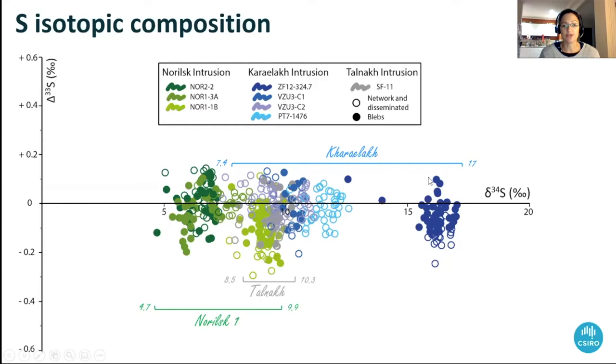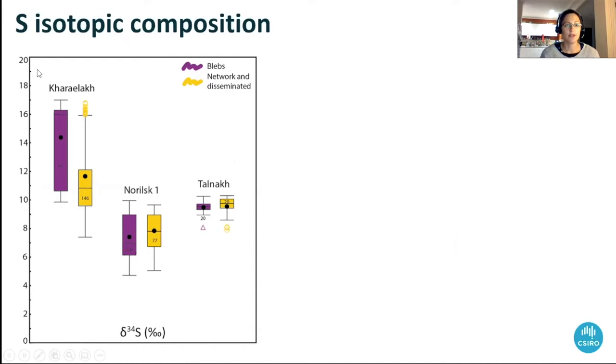If we now compare our two different populations, this is a box and whisker plot of δ34S. In purple you've got the blebby sulfides and in orange-yellow the network disseminated sulfides. What we can see is that both sulfide populations within each sample seem to have undergone the same history in terms of sulfur assimilation from the anhydrite-rich rock as well as re-homogenization of the sulfur isotopic signature by interacting with a silicate melt, because we don't see a clear difference between the two different populations within these different intrusions.